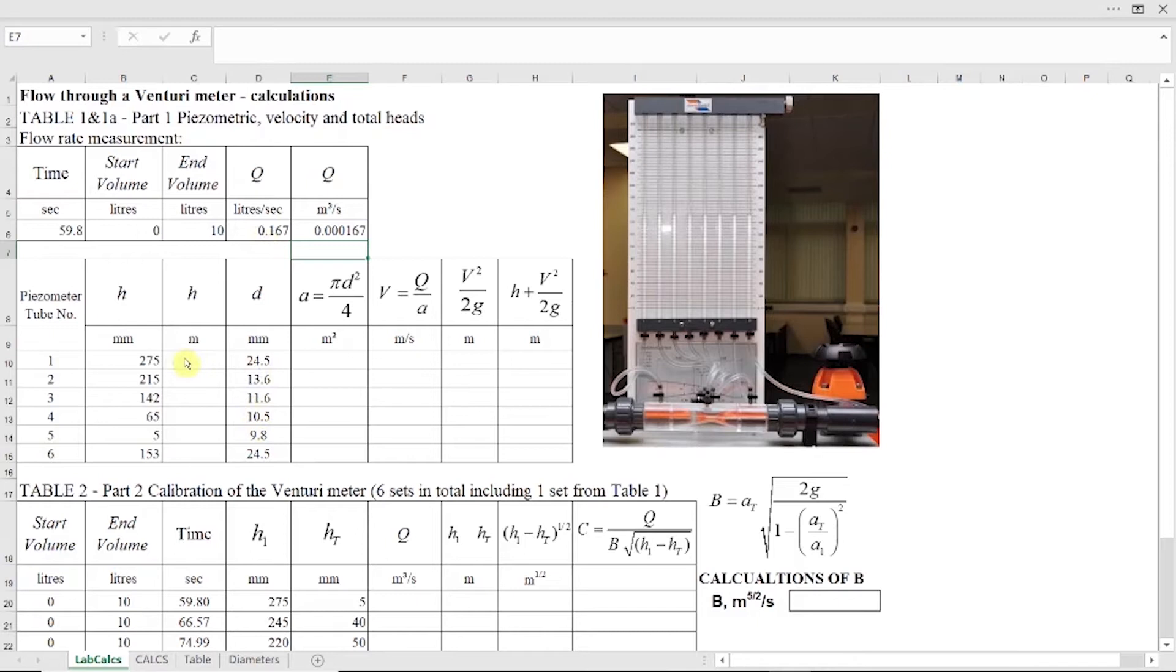Now let's calculate piezometric head in meters. So just conversion, millimeters divided by 1,000 to get meters. And let's just drag it down, or control D to fill it down. And now we need to calculate the cross section area of Venturi meter at the location of each piezometric tube.